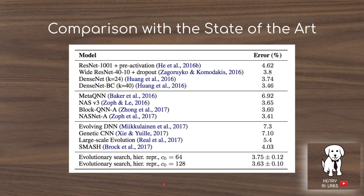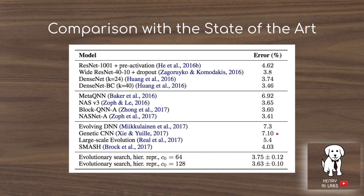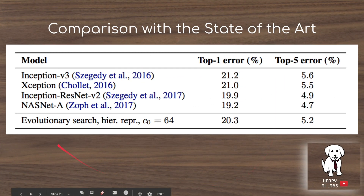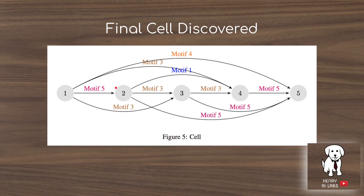The paper compares this representation with previous state-of-the-art techniques like large-scale evolution, the Genetic CNN algorithm, and ResNet-1001. It also compares with other neural architecture search techniques like NASNet-A and hand-designed networks like Inception-ResNet v2, Xception, and Inception v3. The final discovered cell is also shown again to illustrate the concept of neural architecture search and hierarchical representation.